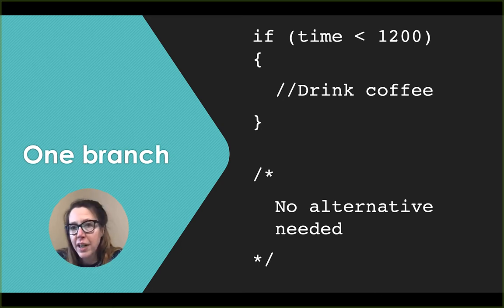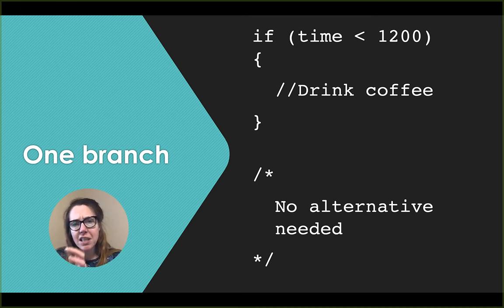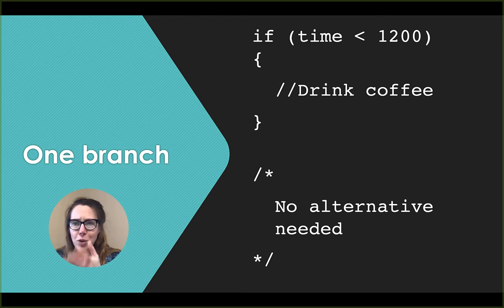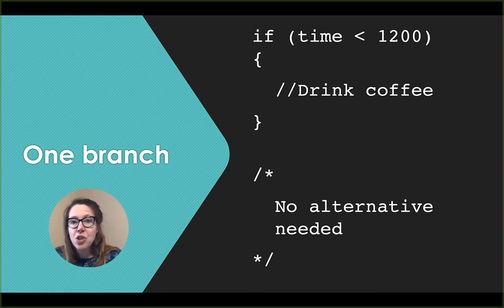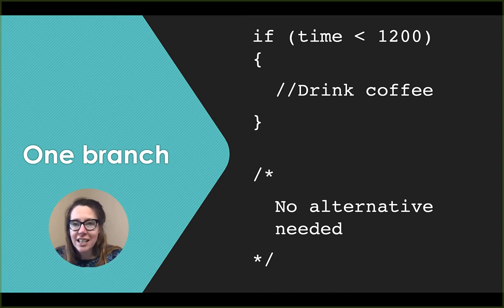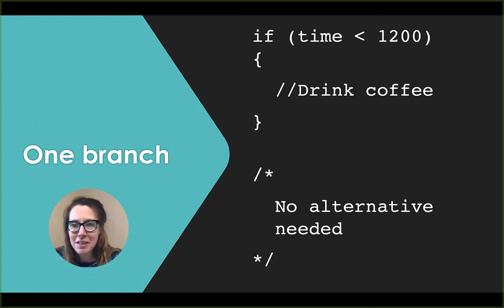If we have one branch, it looks something like this: if time is less than 1200 — so if it's before noon in 24-hour time — we drink coffee. There's no else, so there's no false branch, because it doesn't apply. We were just checking if it was before midday, and if so, we drink some coffee.